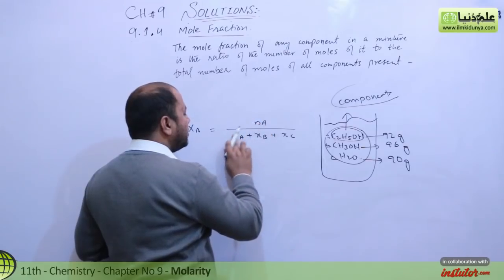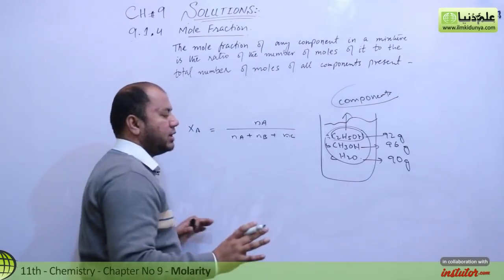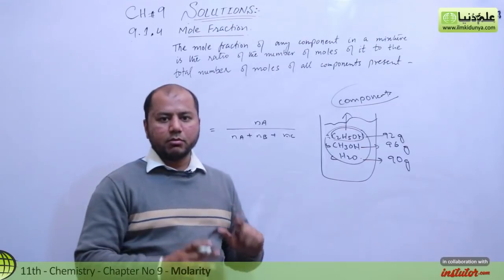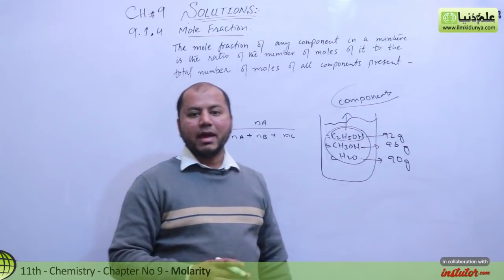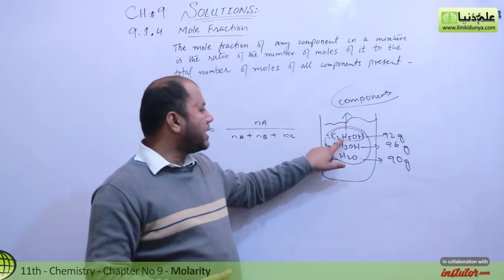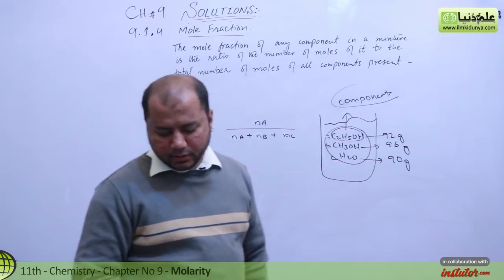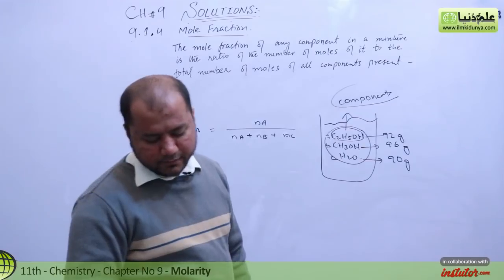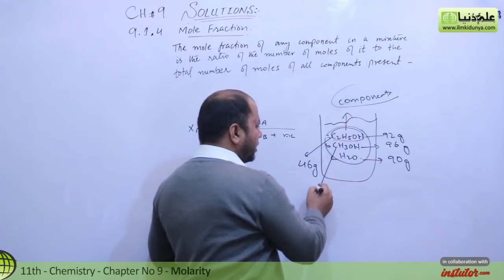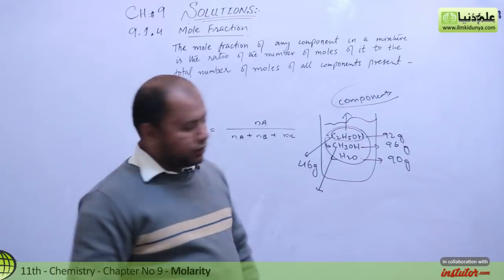It's not a tough calculation. You have to find the moles of each component using the formula: moles = mass given divided by molar mass. The molar mass of ethanol is 46 g/mol. The molar mass of methyl alcohol is 32 g/mol. And water you know well — 18 g/mol.